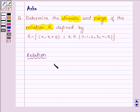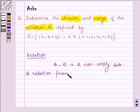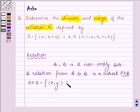Suppose we have any two non-empty sets A and B, then a relation from A to B is a subset of the Cartesian product of A and B, which is defined by all those ordered pairs (x, y) such that x belongs to A and y belongs to B.